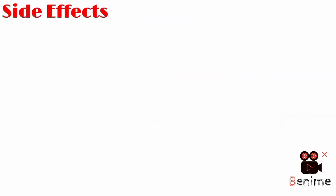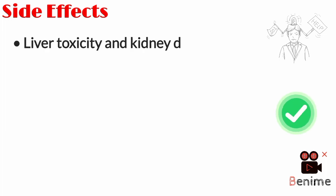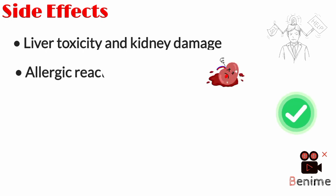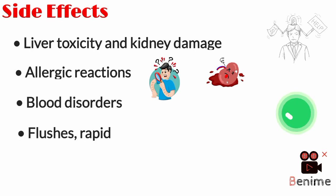Paracetamol very rarely causes side effects if taken at the right dosage. However, side effects include liver toxicity and kidney damage in overdose, which can be fatal. Allergic reactions may produce skin rashes or swelling. Other side effects include blood disorders, flushing, a rapid heartbeat known as tachycardia, or low blood pressure.